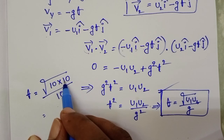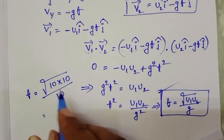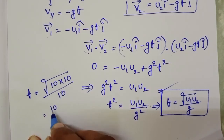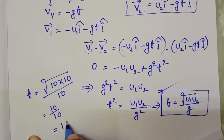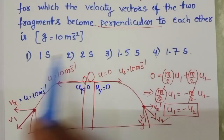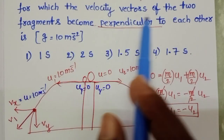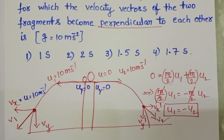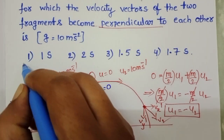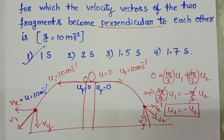Substituting: t = √(10 × 10) / 10 = √100 / 10 = 10 / 10 = 1 second. So after 1 second, the velocity vectors of the two fragments become perpendicular to each other. The first option is correct.